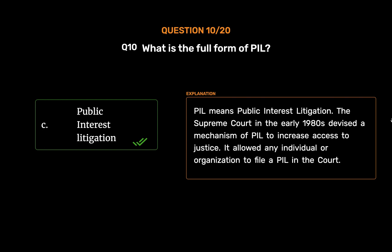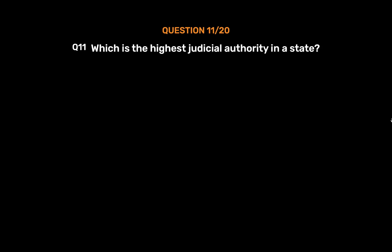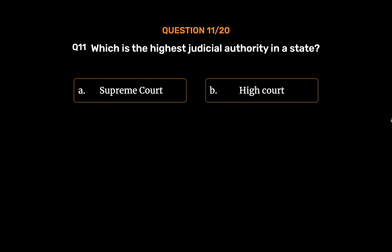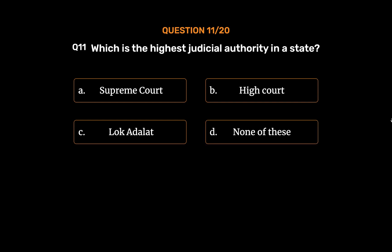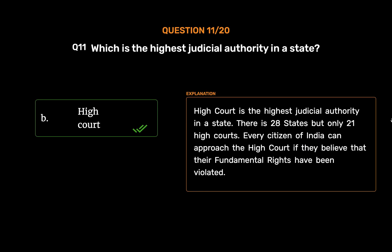It allowed any individual or organization to file a PIL in the court. Question No. 11. Which is the highest judicial authority in a state? Option A: Supreme Court. Option B: High Court. Option C: Lok Adalat. Option D: None of these. The correct answer is Option B: High Court. High Court is the highest judicial authority in a state. There are 28 states but only 21 high courts. Every citizen of India can approach the High Court if they believe that their fundamental rights have been violated.